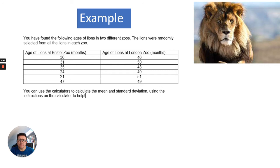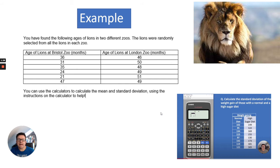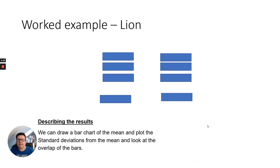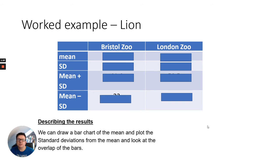So let's have a look at a couple of examples. So here I've got the ages of lions in two different zoos, one at Bristol Zoo and the other at London Zoo. So the lions were randomly selected from all the lions in each zoo. So you, as I said, you can calculate the mean and the standard deviation using the instructions on the calculator. So this is a video that I did earlier. You'll find it in the text box, the description box for this video.